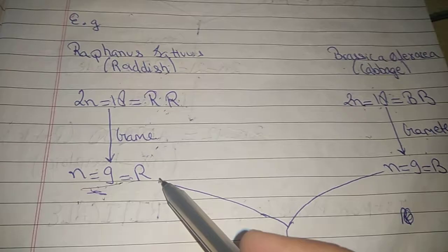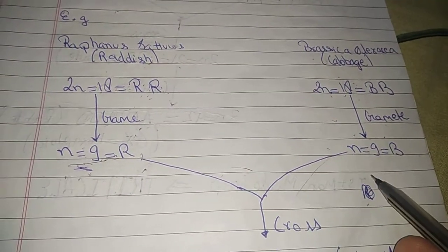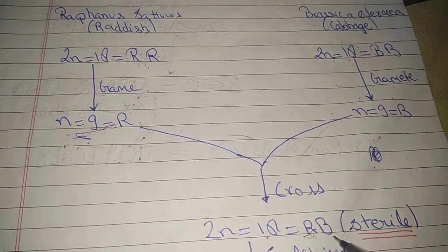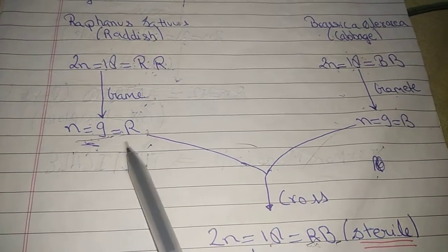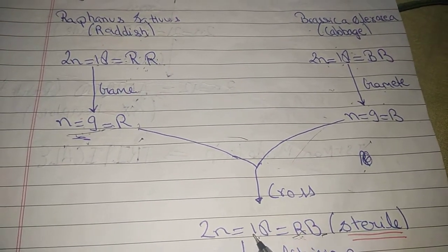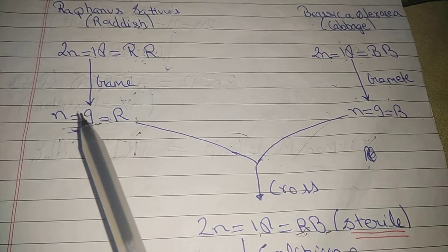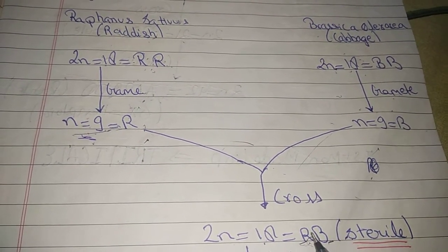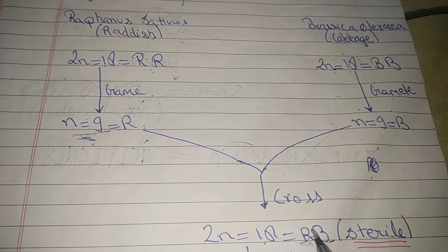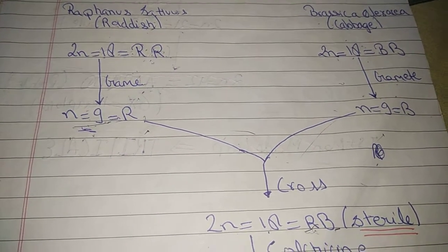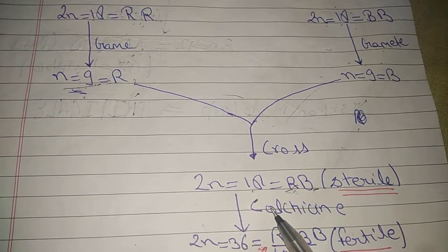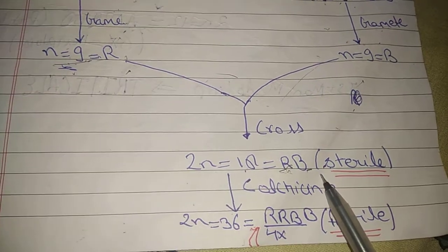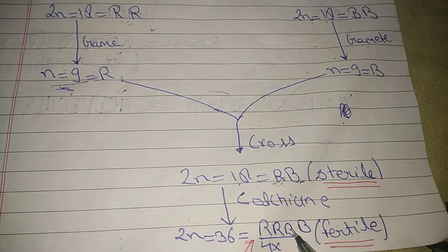When crossed, the F1 generation gives RB, but they are still sterile because homologous chromosomes are absent. In F1, 2n = 18 (9 from each parent). To make them fertile, we use colchicine to double the chromosome number: 18 becomes 36, giving 2n = 36 with RRBB. Homologous chromosomes are now present, so gamete formation takes place and individuals become fertile.